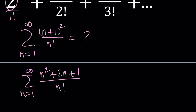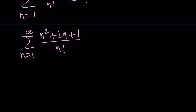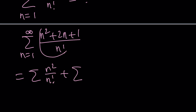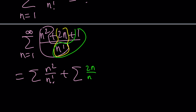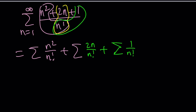We're going to split this into three separate sigma sums. We'll have n squared over n factorial, plus 2n over n factorial, plus 1 over n factorial. We find each sum individually and add them up at the end.